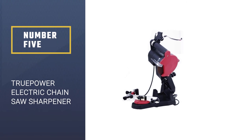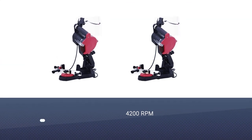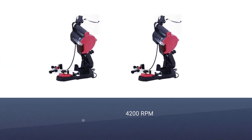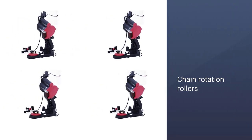Number 5. True Power Electric Chainsaw Sharpener. The True Power Electric Chainsaw Sharpener is one of the more affordable mounted models available. This can be mounted onto either walls or benches and gives you a 4200 RPM which makes quick work of sharpening blades.